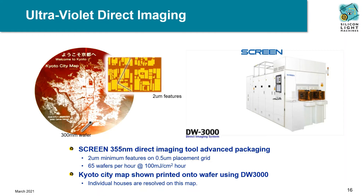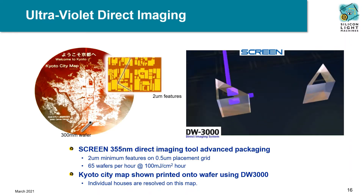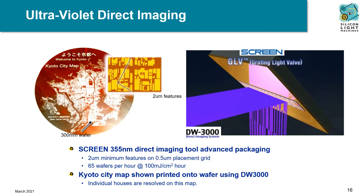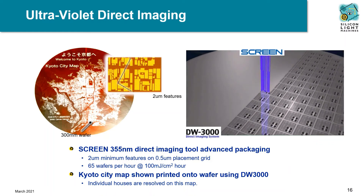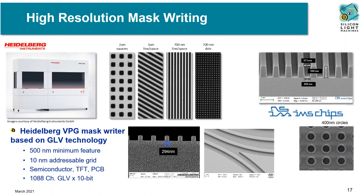Another common application of the GLV is in direct-write technology. The GLV's channel count and speed allows for high-throughput maskless lithography. Screen's DW3000 takes advantage of the GLV to create 2 micron features at 65 wafers per hour at a power of 100 mJ per centimeter squared. The GLV can be configured to create unique identifiers and geometries for every wafer. Additionally, Heidelberg Instruments uses the high resolution and bit depth of the GLV to create submicron features with their VPG maskless lithography system.